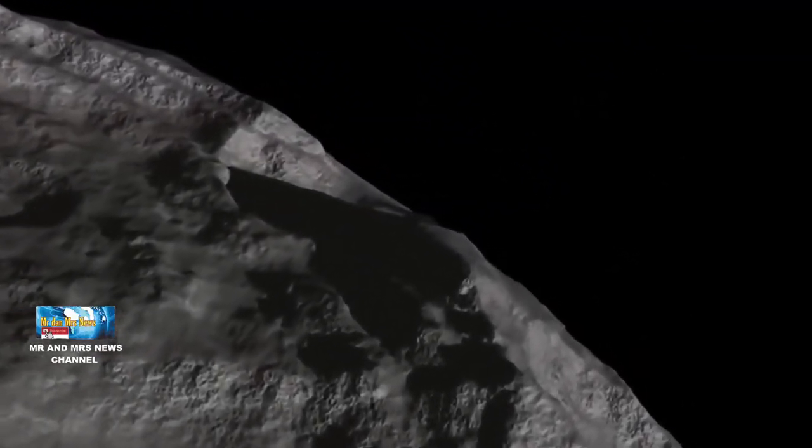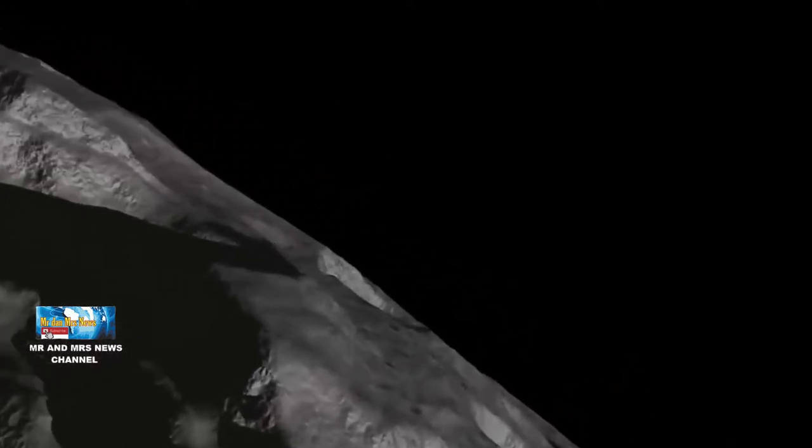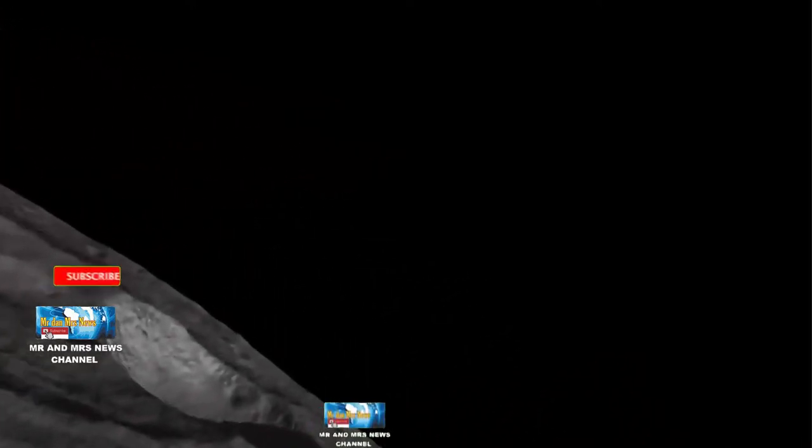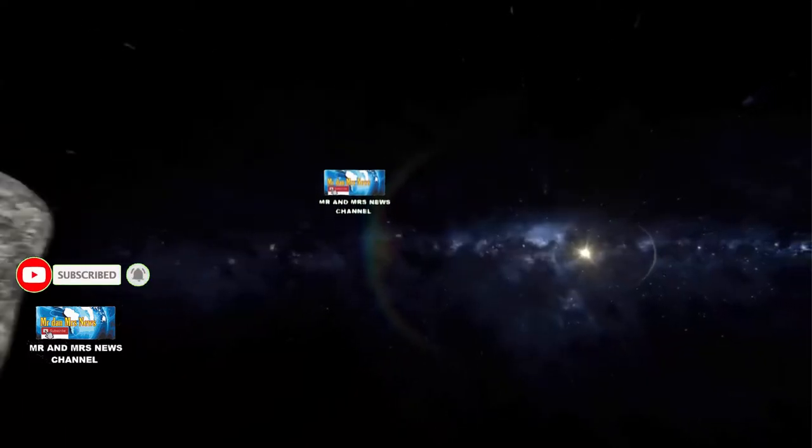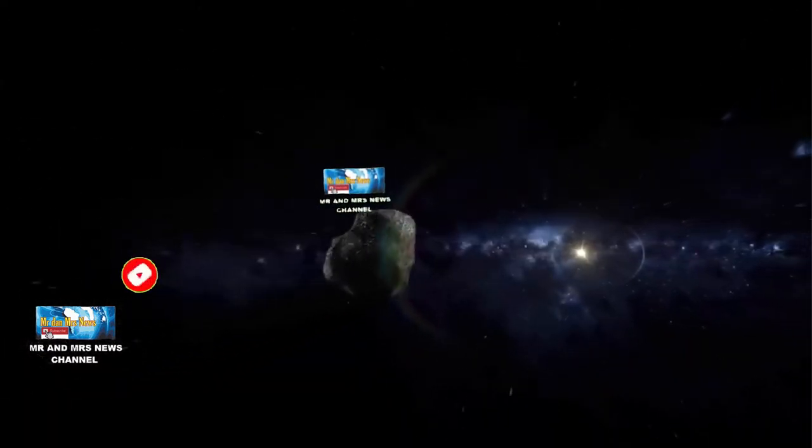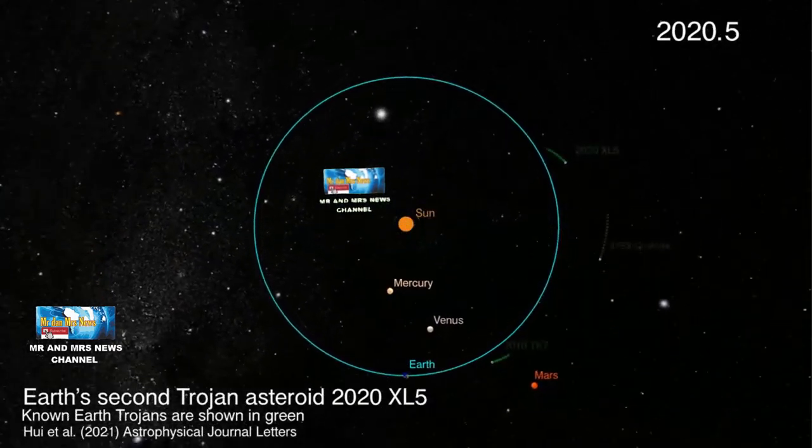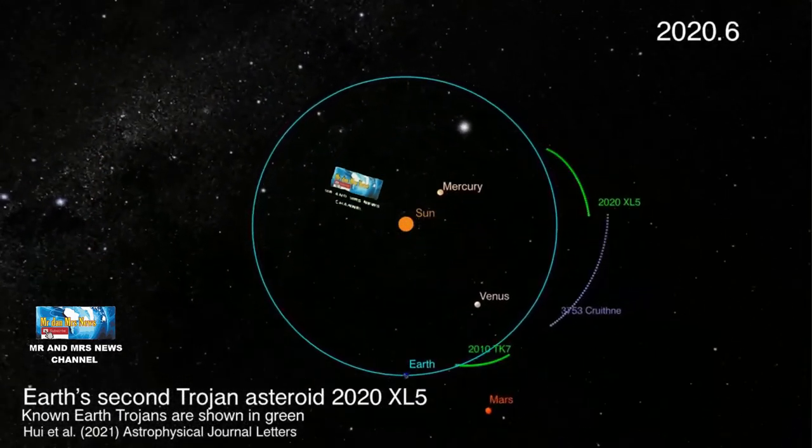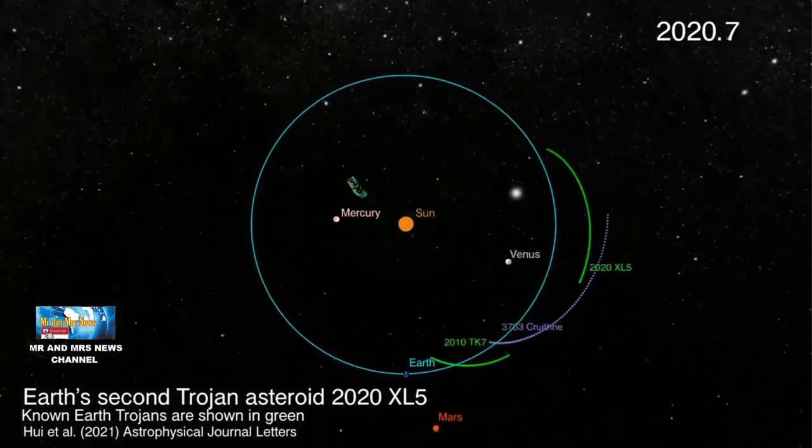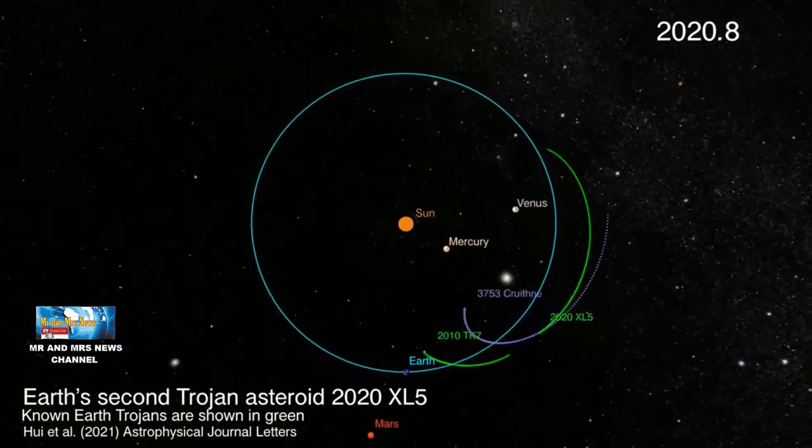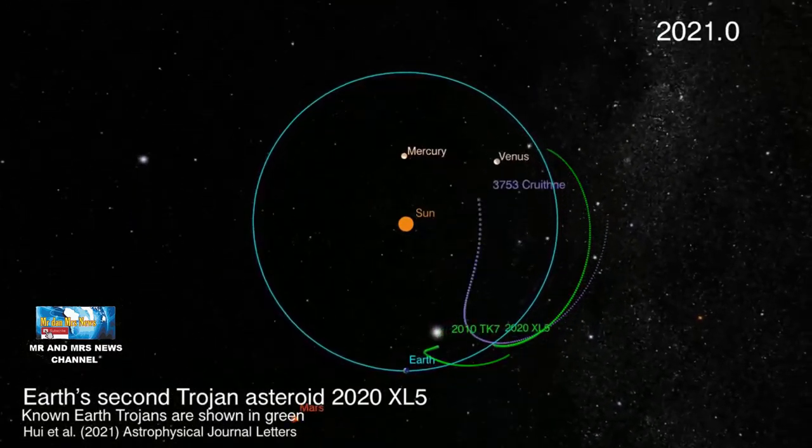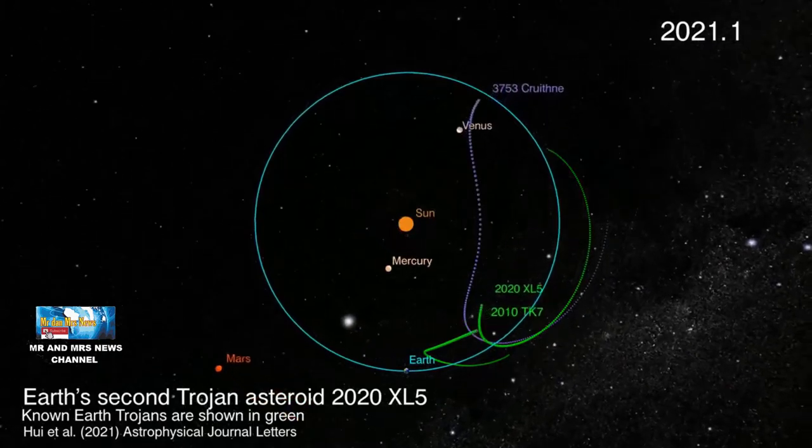Sebuah asteroid Trojan baru yang dinamai 2020 XL5 telah bergabung dalam orbit bumi mengelilingi matahari. Bongkahan batu ini hanyalah objek kedua dari jenisnya yang pernah diidentifikasi secara meyakinkan. Penemuannya menawarkan wawasan baru mengenai bebatuan misterius tersebut.